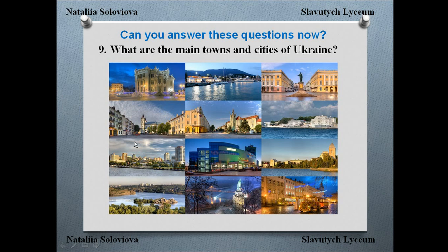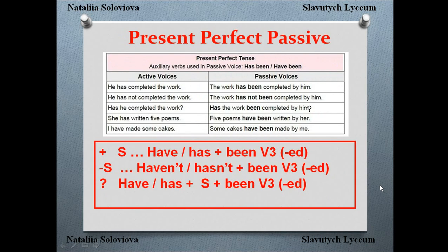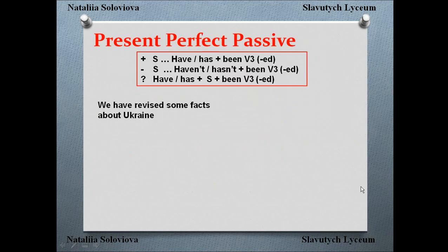So now it's time to revise our grammar — to remember the table from the previous lesson: present perfect passive. We have already practiced changing sentences from active voice into passive voice. We have revised some facts about Ukraine — that is present perfect active: 'We have revised some facts.' If I want to change it to passive, the new subject will be 'some facts about Ukraine' — plural, so I use 'have.'